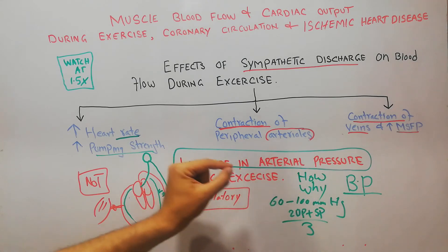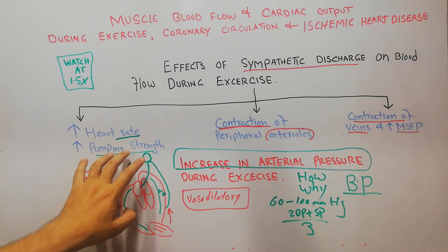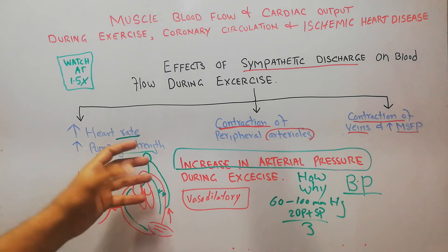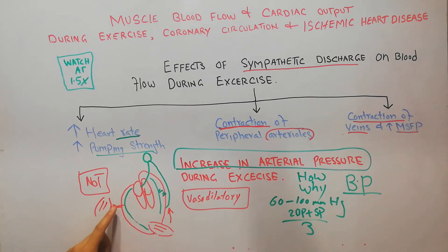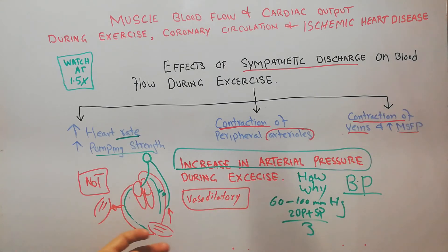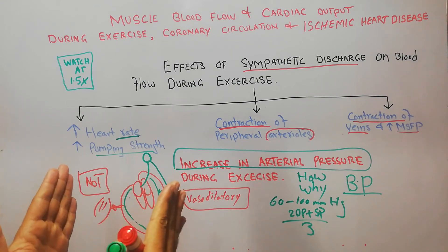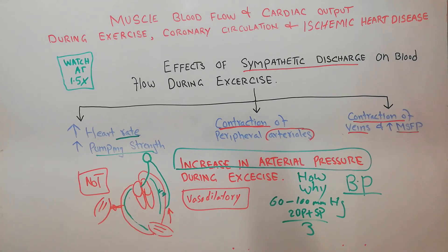The increase in arterial pressure during exercise occurs due to increase in heart rate, increased pumping effectiveness of the heart, contraction of peripheral arterioles especially in muscles where extra blood is not needed, and finally contraction of the veins and increase in mean systemic filling pressure. When more blood fills the veins, there is more filling pressure, helping to push more blood toward the heart.